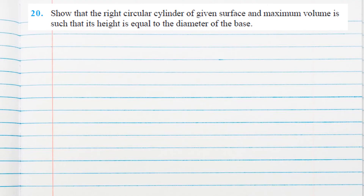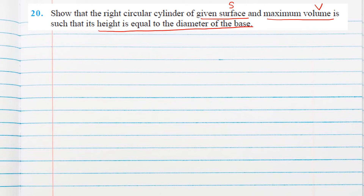Next problem: show that the right circular cylinder of given surface area with maximum volume is such that its height equals the diameter of the base. The three parts here are: surface area is given (treat as constant), volume is to be maximized (our function), and we must show height equals diameter.